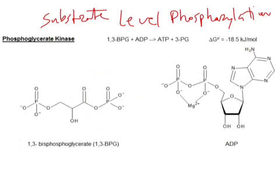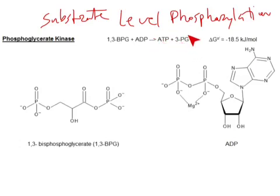Because this reaction is so favorable in this direction, we're going to have a reverse of normal kinase function. This is named phosphoglycerate kinase because it was first identified going in the other direction — 3PG plus ATP forms 1,3-BPG — but in our bodies it works the opposite direction. It's still named phosphoglycerate kinase because it was first identified going backwards.